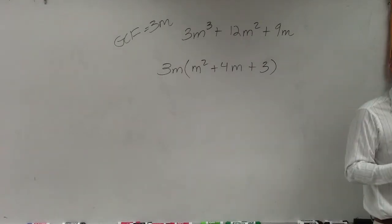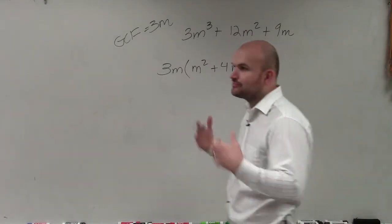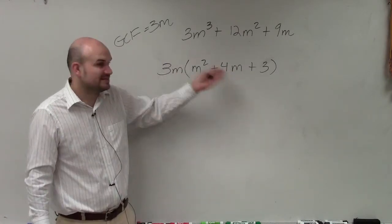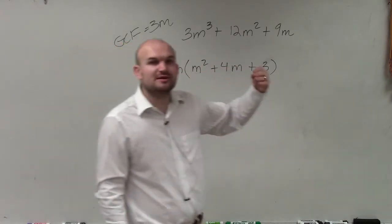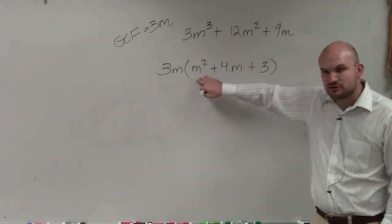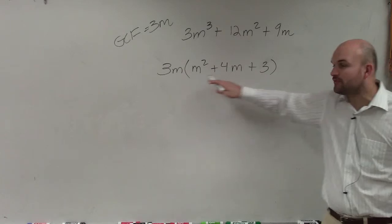Now when we're factoring, we want to be able to still write it as a product of its factors. Yes, this is a product of two terms. We did write it as a product. But we always want to be able to see, can you continue factoring it? And here we have a trinomial, m squared plus 4m plus 3.